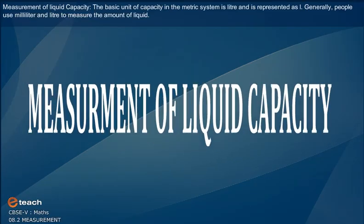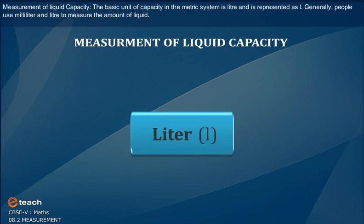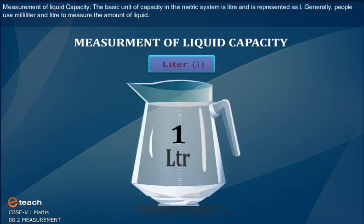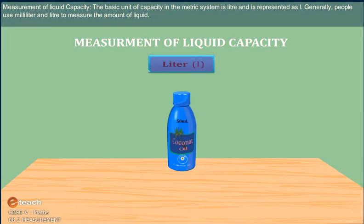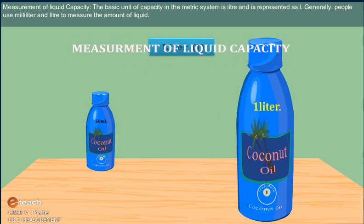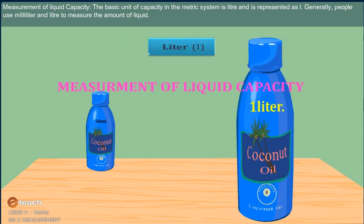Measurement of liquid capacity. The basic unit of capacity in the metric system is liter and is represented as L. Generally, people use milliliter and liter to measure the amount of liquid.